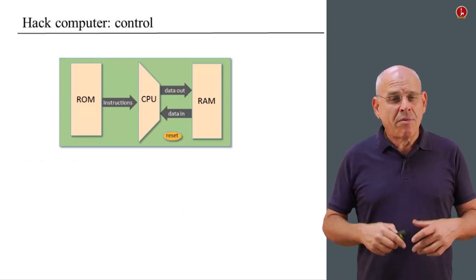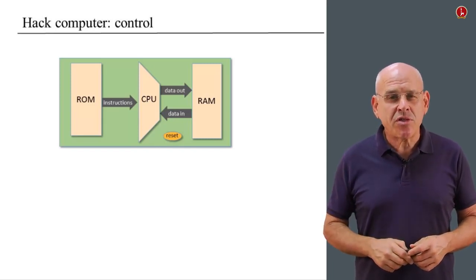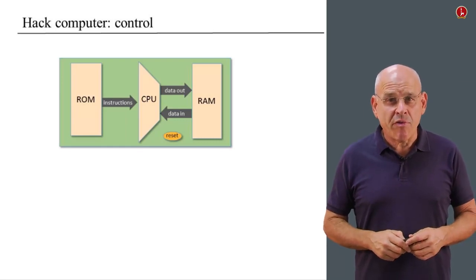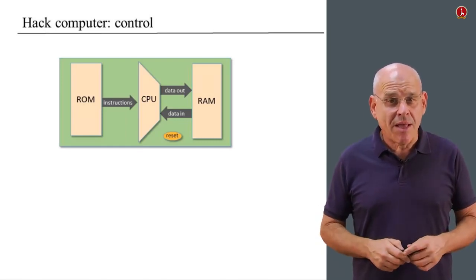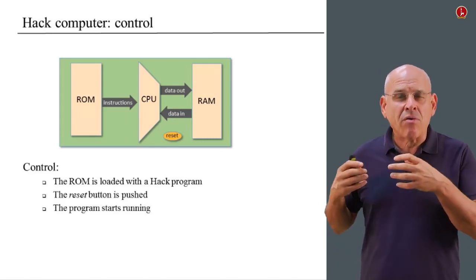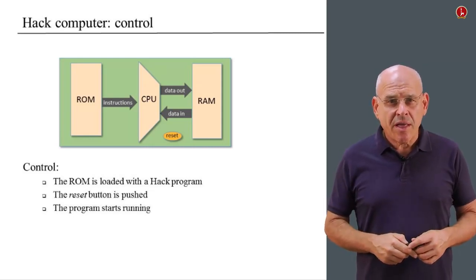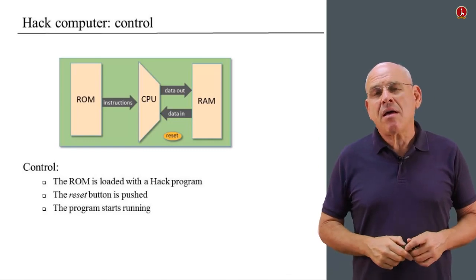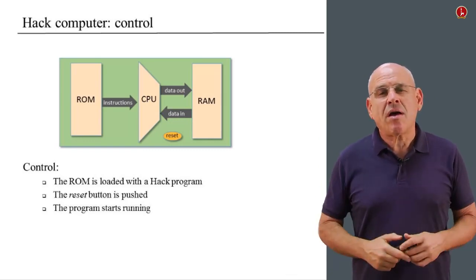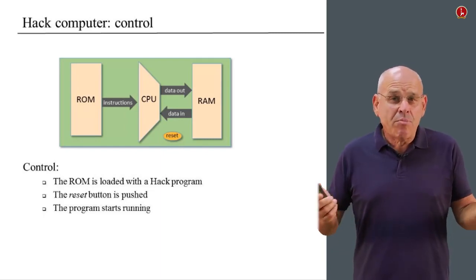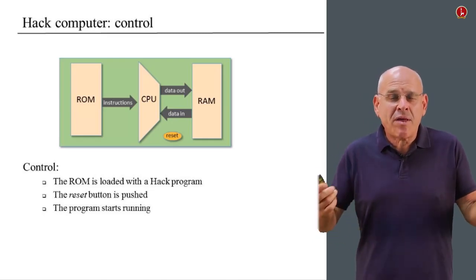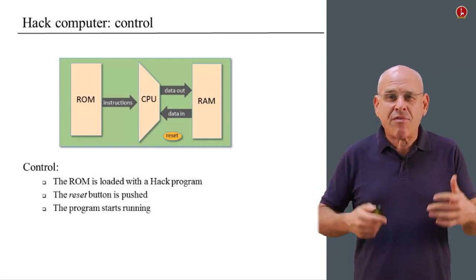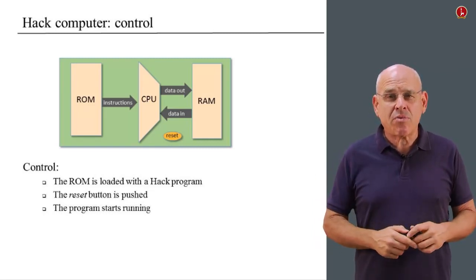What about control? Before we talk about control, I have to introduce yet another element in this platform, which is called a reset button. Here is how I cause this computer to do something useful for me: I write a program — the program is a set of 16-bit numbers. I take these 16-bit numbers and somehow put them into the ROM. Then I press the reset button, and once I do this, the program starts running. It all depends on what is written in the program — the computer might start playing music, showing a video clip, or computing the average of a million numbers.